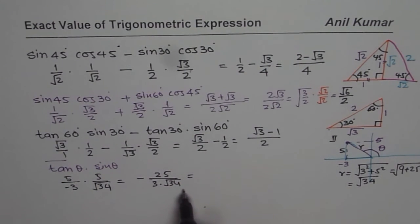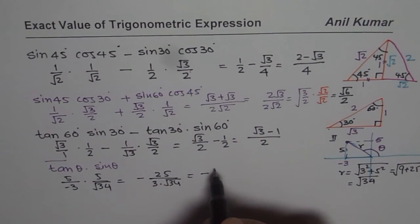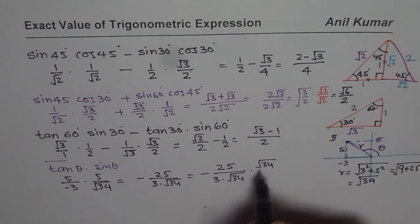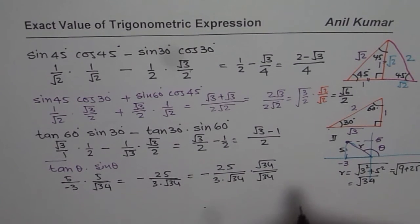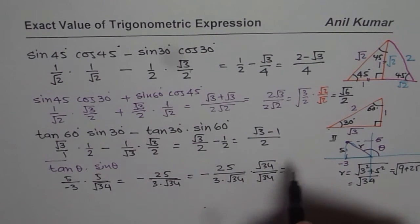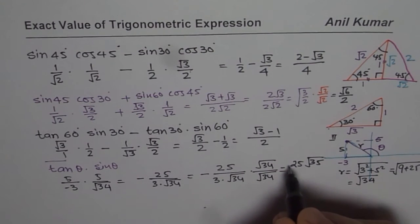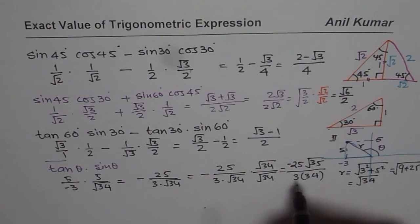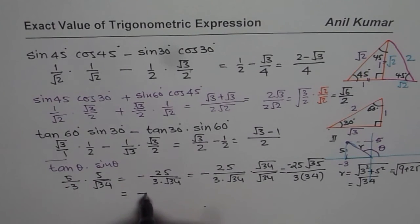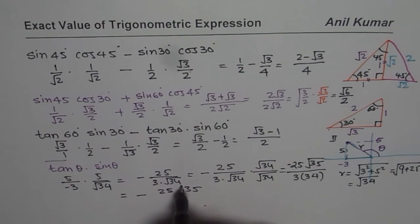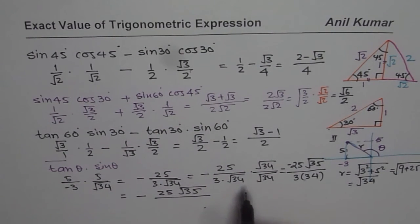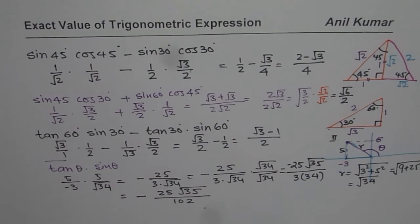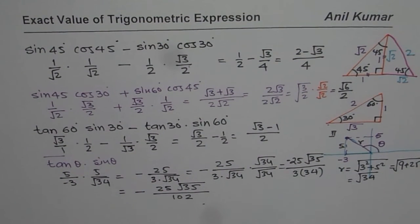We prefer to write this without a radical in the denominator, so we rationalize by multiplying and dividing by square root of 34. The numerator becomes −25 square root of 34, and the denominator becomes 3 times 34, which equals 102. So the exact value of tan θ times sin θ is negative 25 square root of 34 over 102.